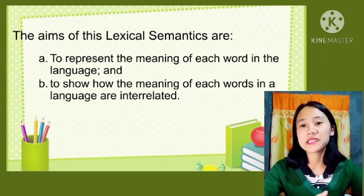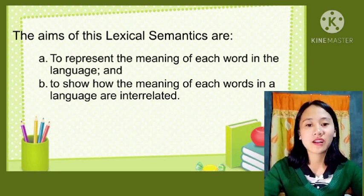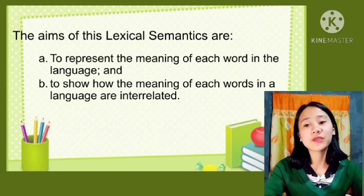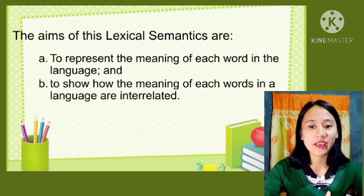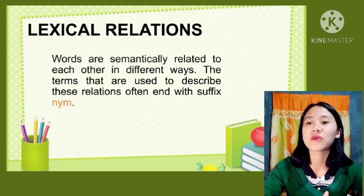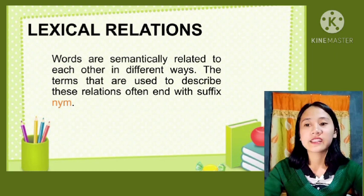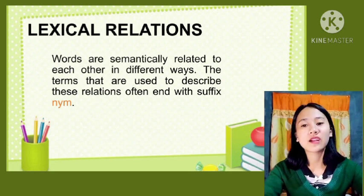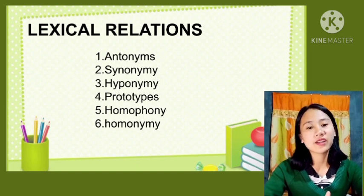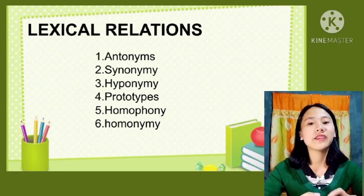There are two aims under lexical semantics: first, to represent the meaning of each word in the language; and second, to show how the meanings of each word in a language are interrelated. Under lexical semantics, there are lexical relations — words that are semantically related to each other in different ways. The terms used to describe this relation often end with the suffix '-nym'. There are six lexical relations: antonyms, synonymy, hyponymy, prototypes, homophony, and homonymy.